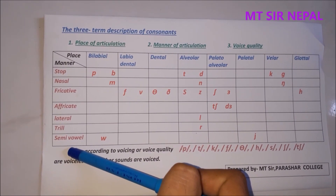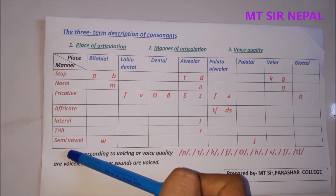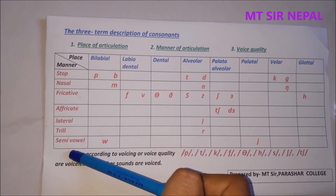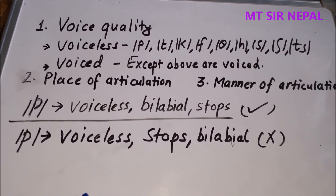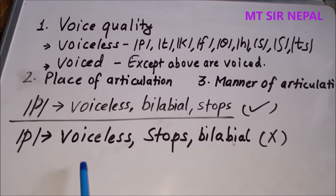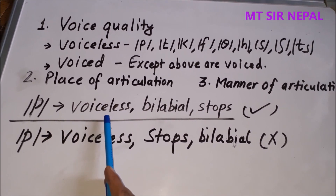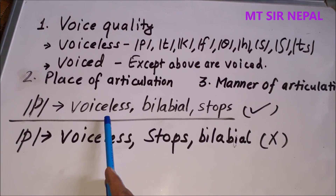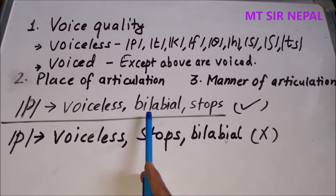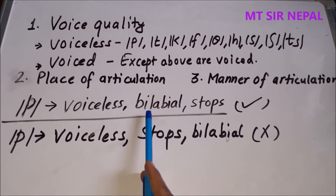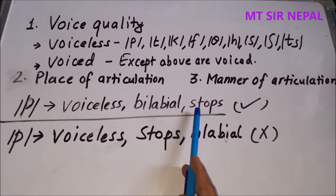Let's see some examples so we understand it clearly. For the /p/ sound: first, it is voiceless. Then according to place of articulation, it is bilabial. And according to manner of articulation, it is a stop. So /p/ is a voiceless bilabial stop.